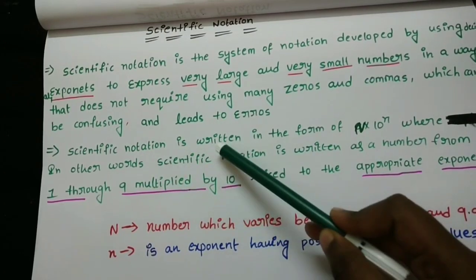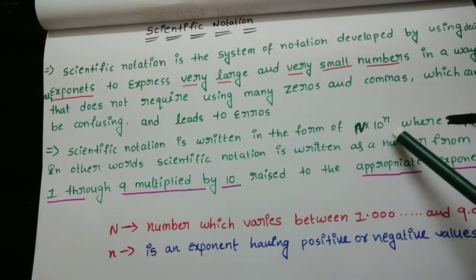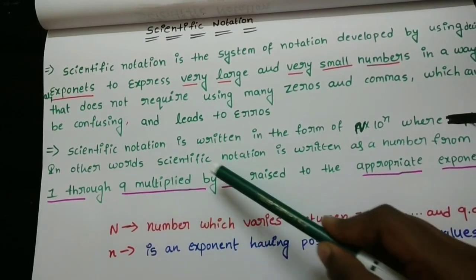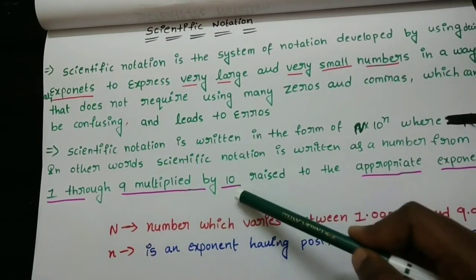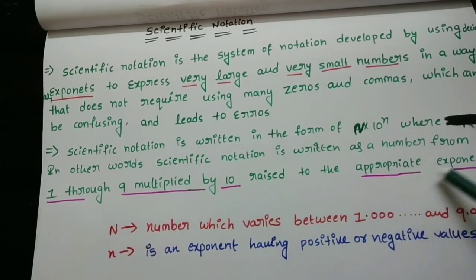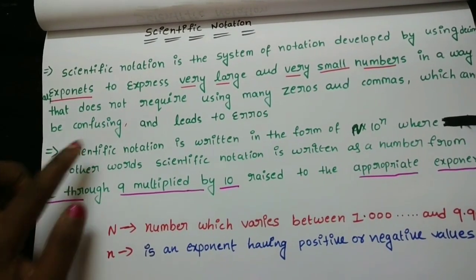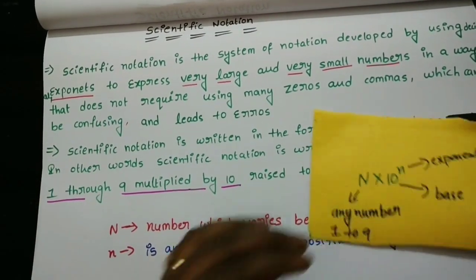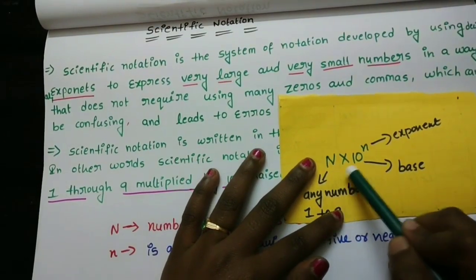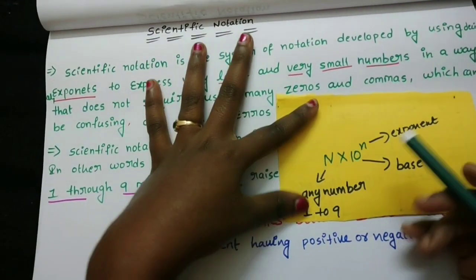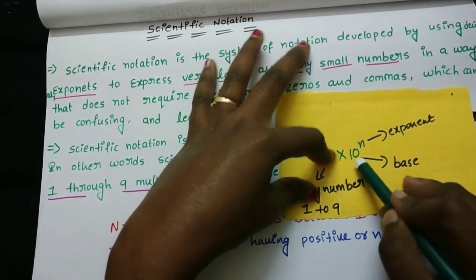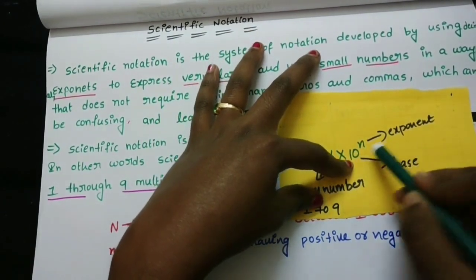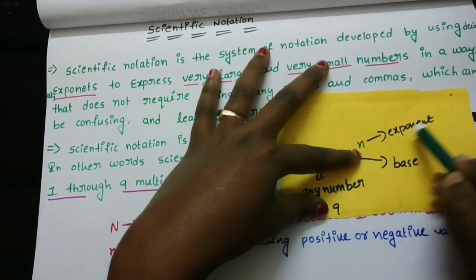Scientific notation is written in the form of N into 10 to the power of n. In other words, scientific notation is written as a number from 1 through 9 multiplied by 10, raised to the appropriate exponent. This means that 10 is the base and n is the exponent.